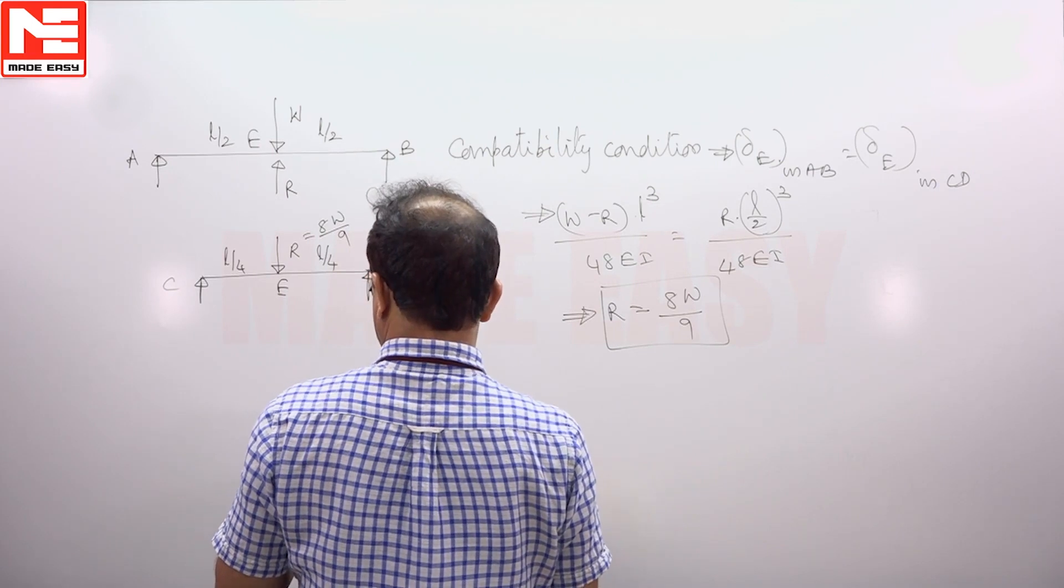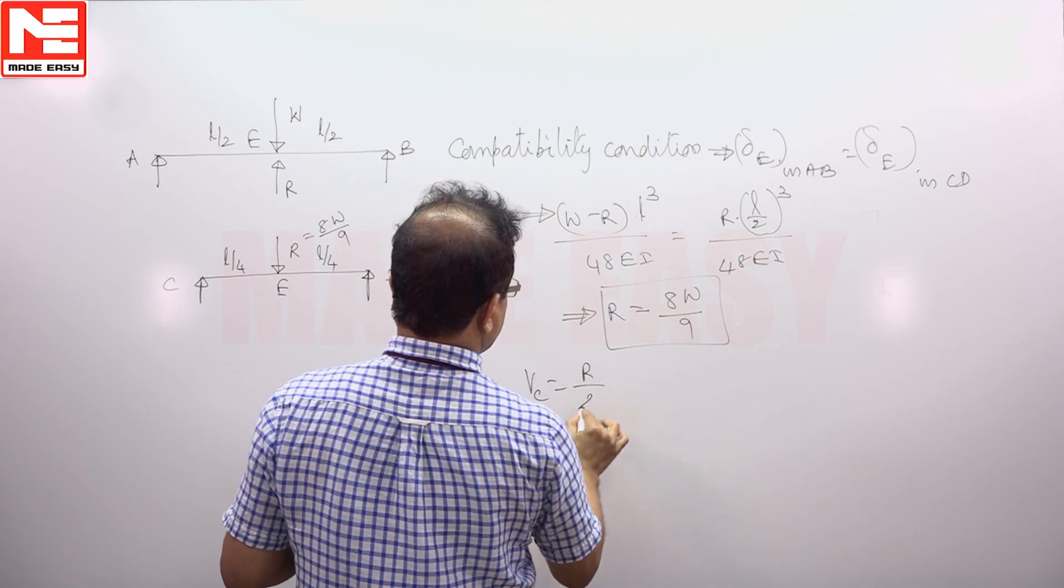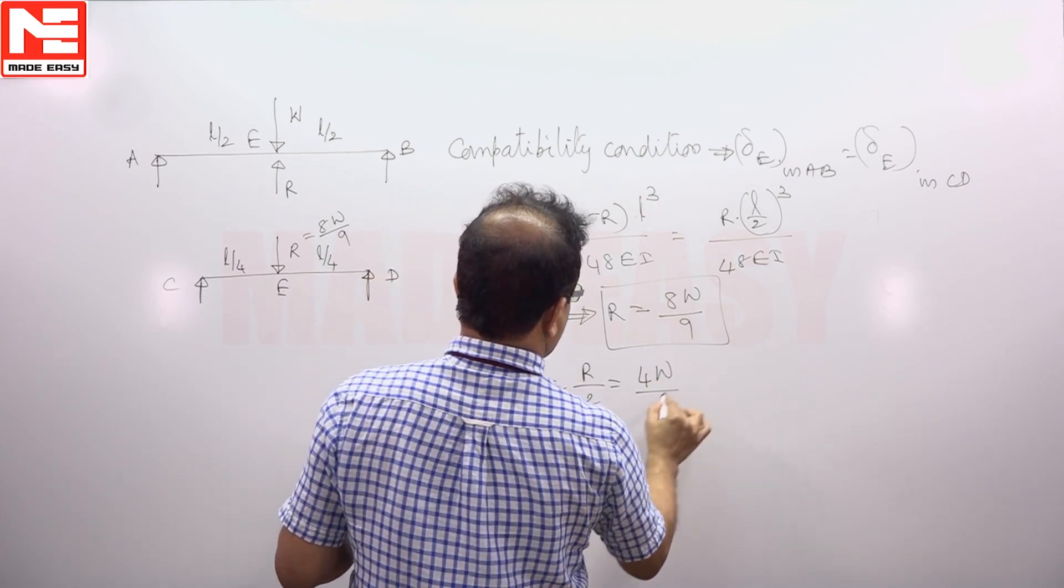Vertical reaction at C we want. So vertical reaction at C is R by 2 that means 4W by 9.